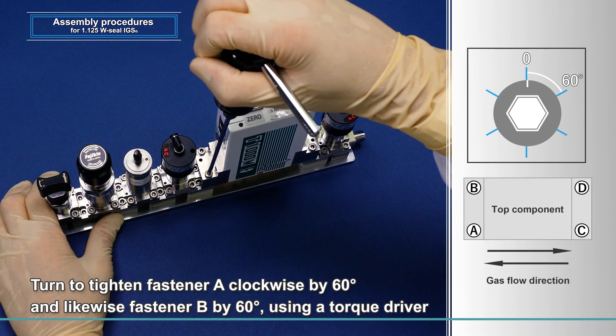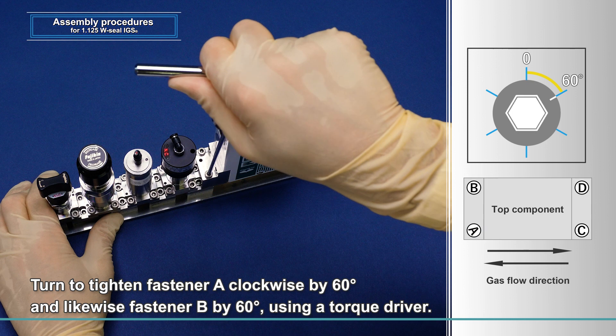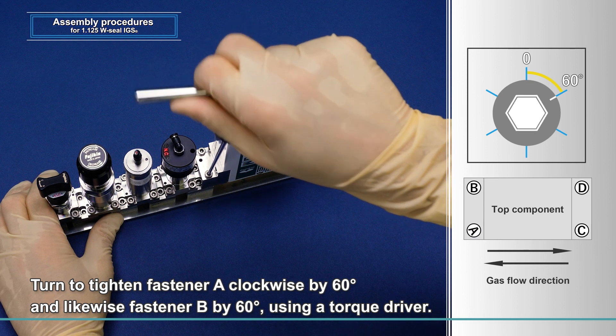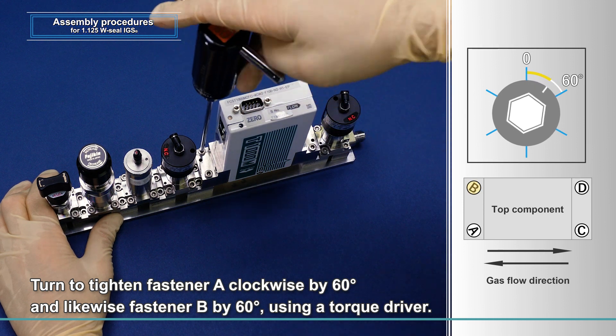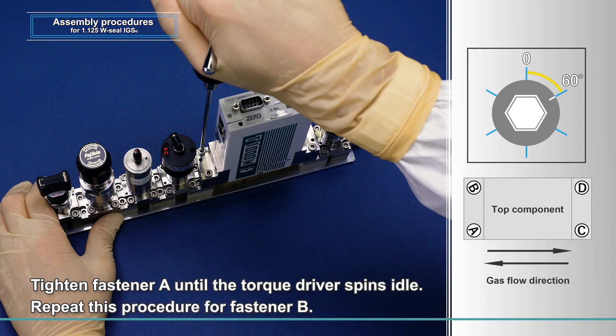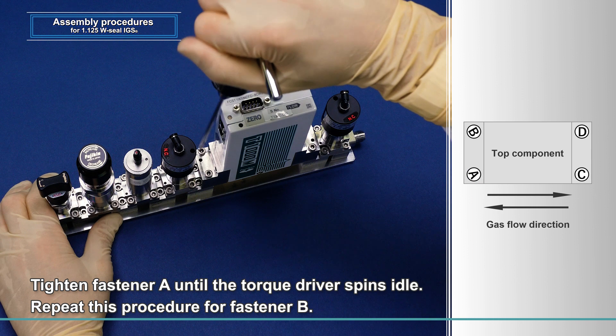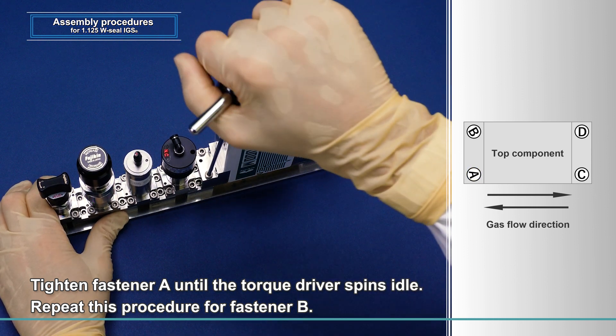Turn fastener A by about 60 degrees using a torque driver. Likewise, turn fastener B by about 60 degrees. Turn fastener A until the torque driver spins idle. Repeat this procedure on fastener B too.